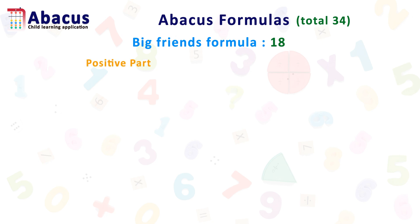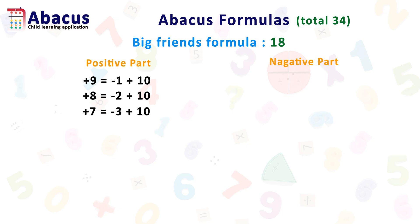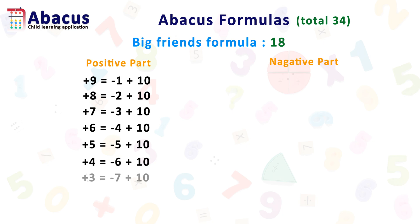Let's see the positive part of big friends formulas. Plus 9 equals minus 1 plus 10; plus 8 equals minus 2 plus 10; plus 7 equals minus 3 plus 10; plus 6 equals minus 4 plus 10; plus 5 equals minus 5 plus 10; plus 4 equals minus 6 plus 10; plus 3 equals minus 7 plus 10; plus 2 equals minus 8 plus 10; plus 1 equals minus 9 plus 10.